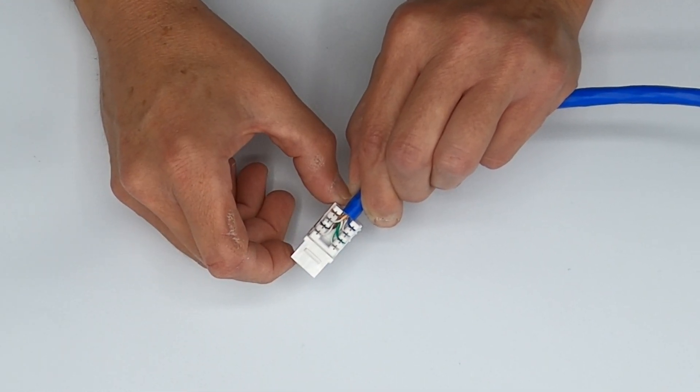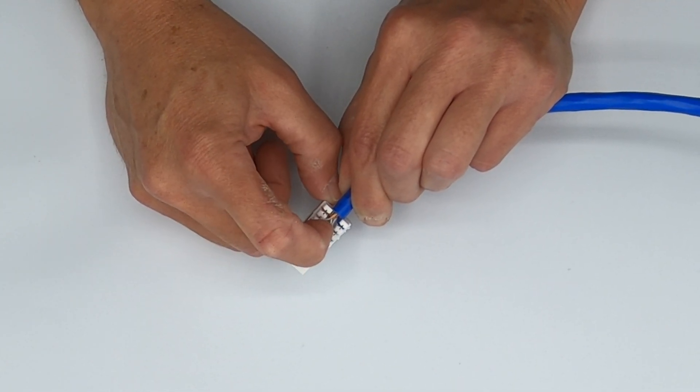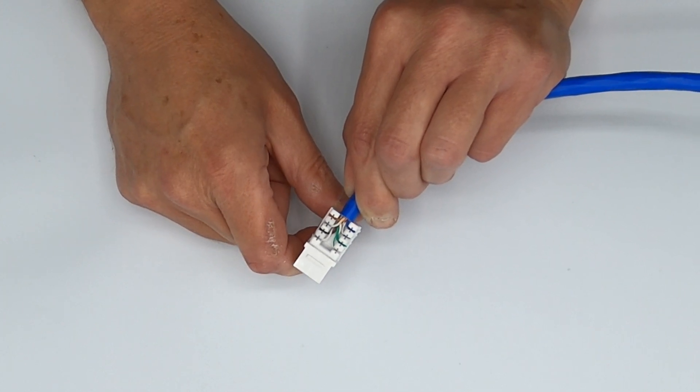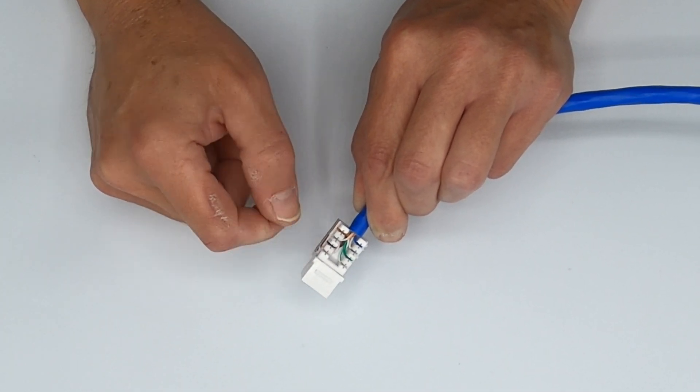If you notice the conductors from the - if you look at the conductor pairs, where the untwist stops or where the twist stops and it gets untwisted in order to get into these slots is no more than one half inch. And this jack will perform exactly like it should.